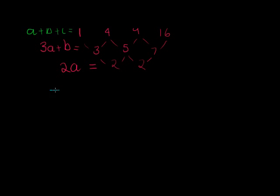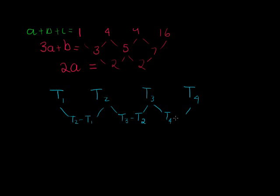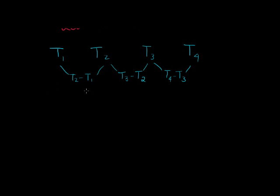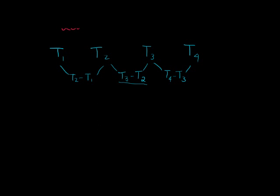Let's look at where this all comes from. Imagine we have term 1, term 2, term 3, and term 4. The first differences are: term 2 minus term 1, term 3 minus term 2, and term 4 minus term 3. The second difference would then be term 3 minus term 2, minus term 2 minus term 1.